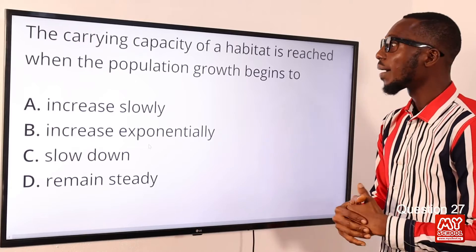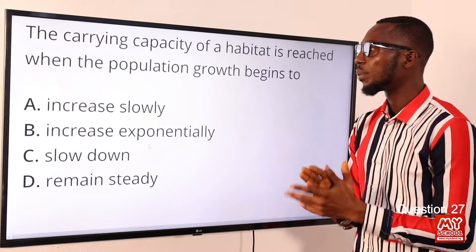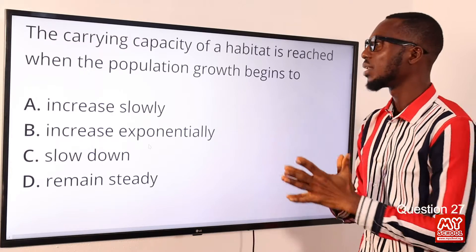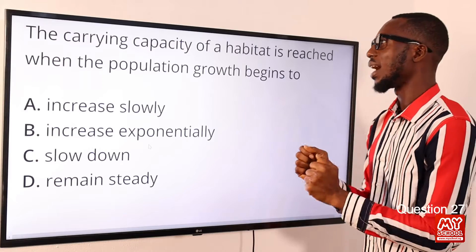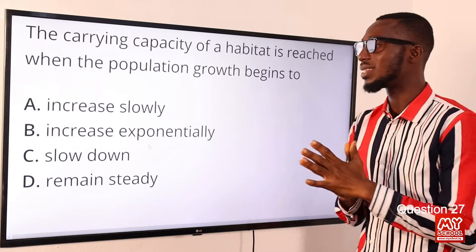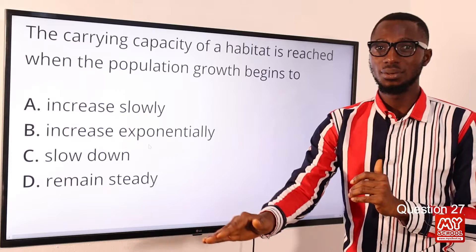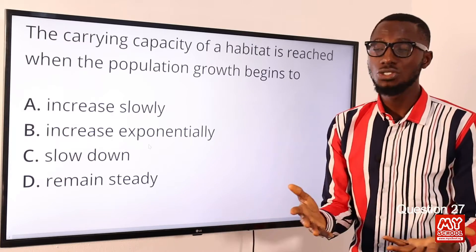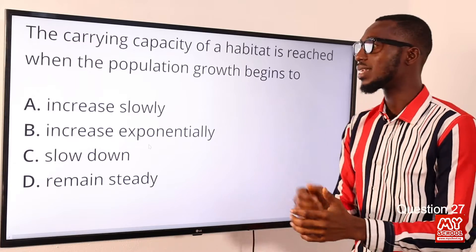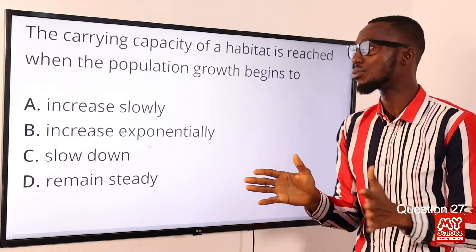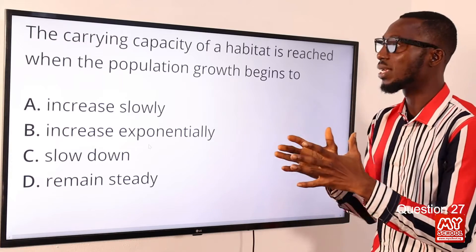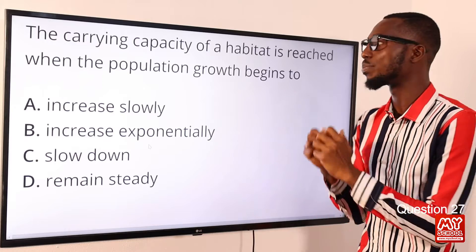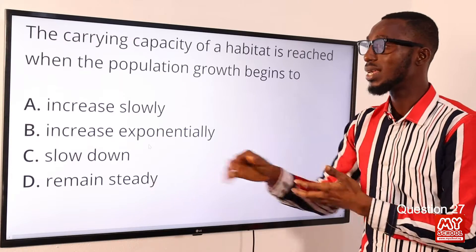Question 27. The carrying capacity of a habitat is reached when the population growth begins to do what? Looking at the logistic curve, you can see a sign when the capacity has been reached: the population growth begins to decline — it begins to go down. This is due to an increase in competition and scarce resources. At a certain point population growth will amount to zero. Option C is the correct option.